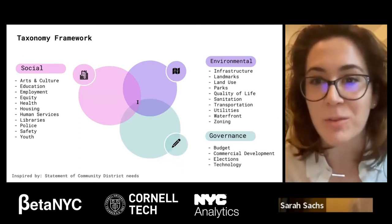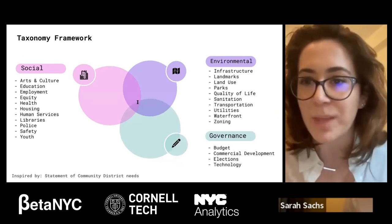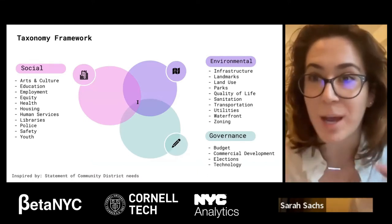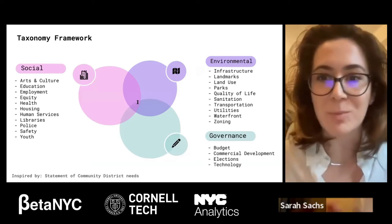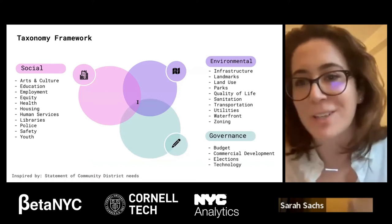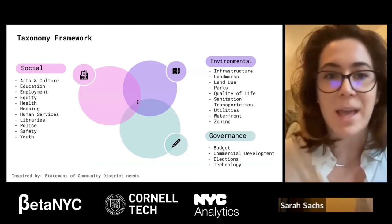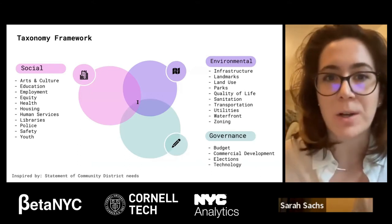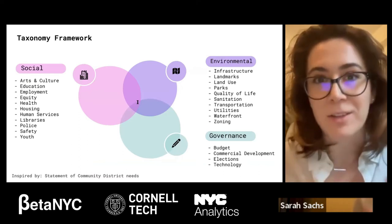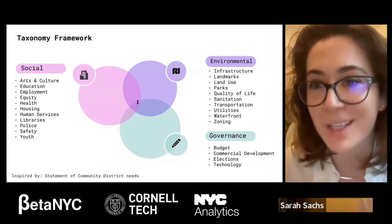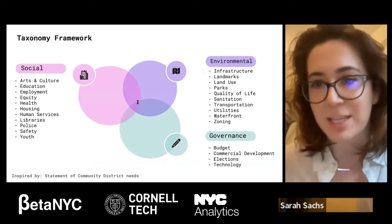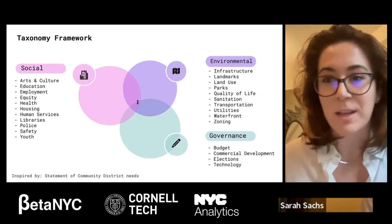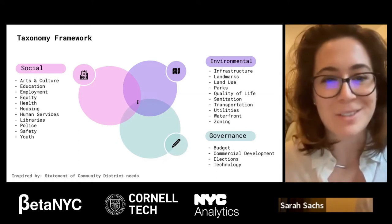When I mention the taxonomy, these are some of the topics we classify a meeting under. A meeting can talk about a variety of different things, and a meeting can be classified under multiple topics. This taxonomy covers environmental, governance, and social-related topics, and was inspired by the Statement of Community District Needs. We use this taxonomy to help extract key sentences — rather than finding a sentence like 'can you please unmute yourself,' we would find something about education or sanitation.